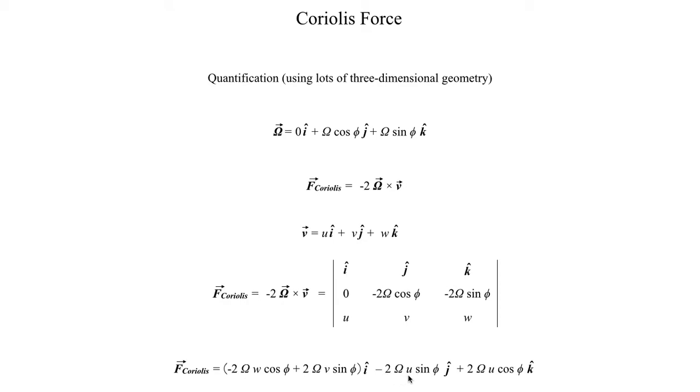Minus 2Ω zonal wind times the sine of latitude j-hat, so this whole thing is the meridional component of our Coriolis force. And then plus 2Ω u cosine latitude, and that entire thing is the vertical component of the Coriolis force.